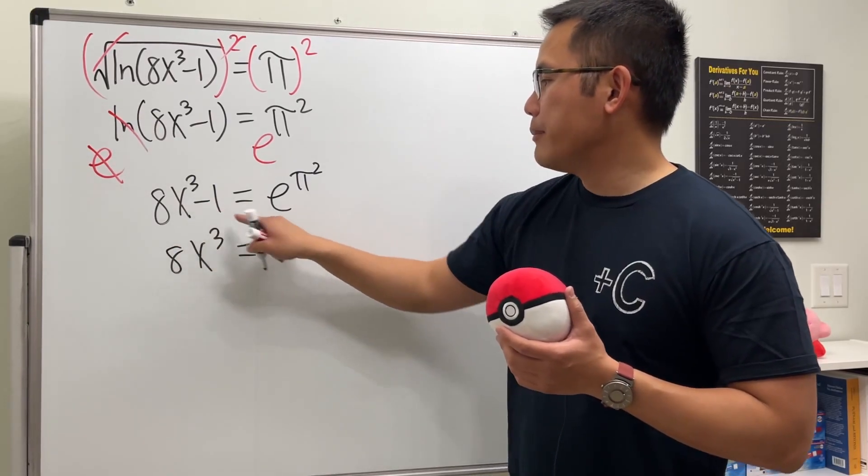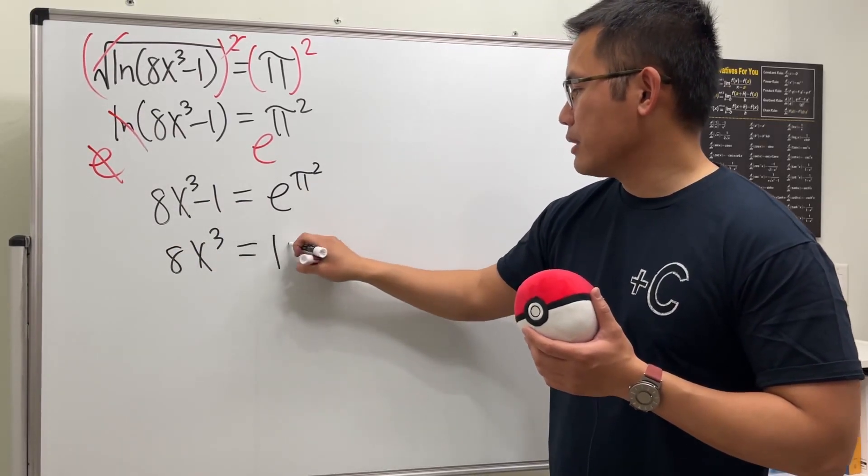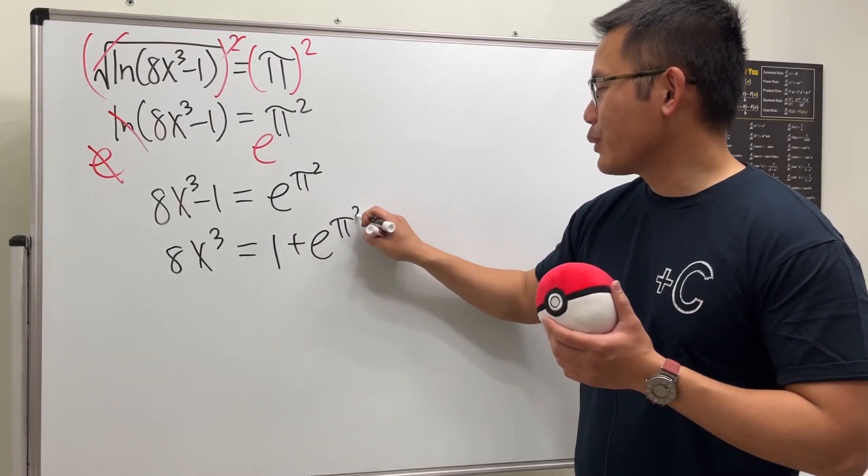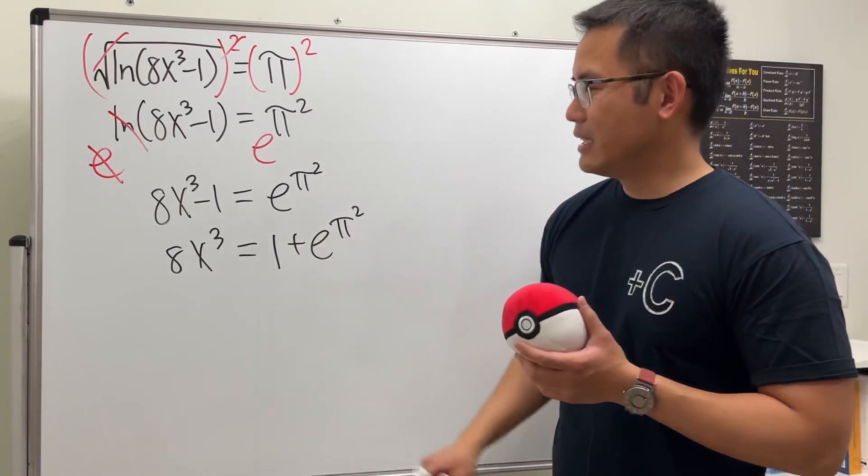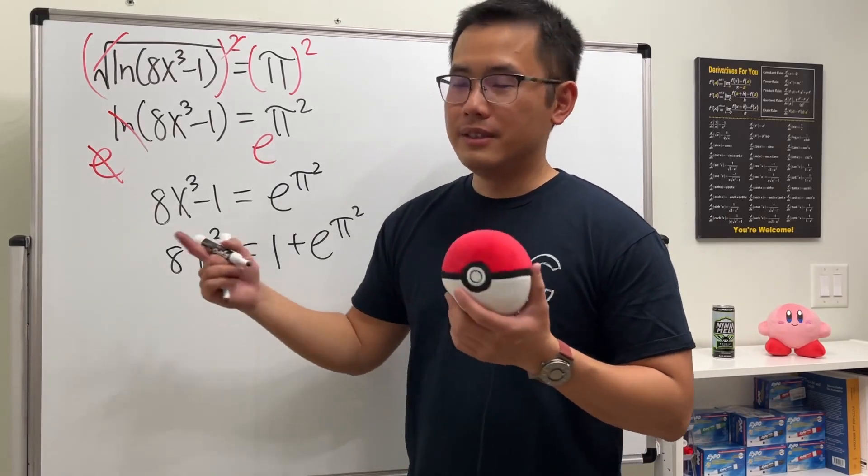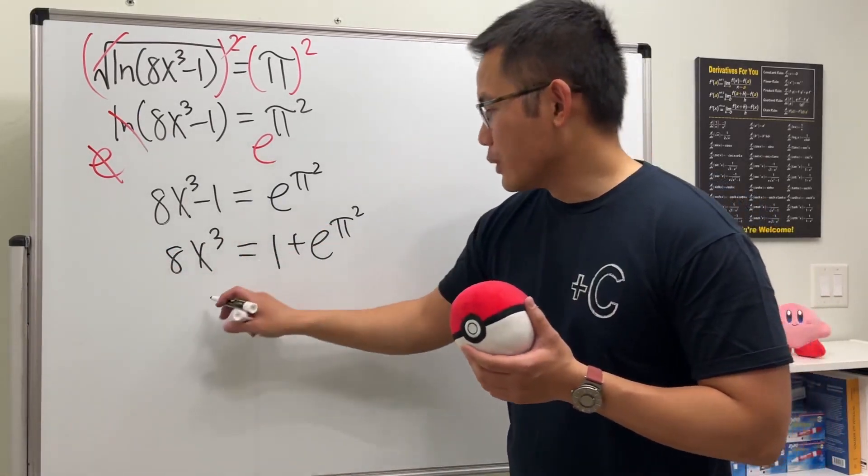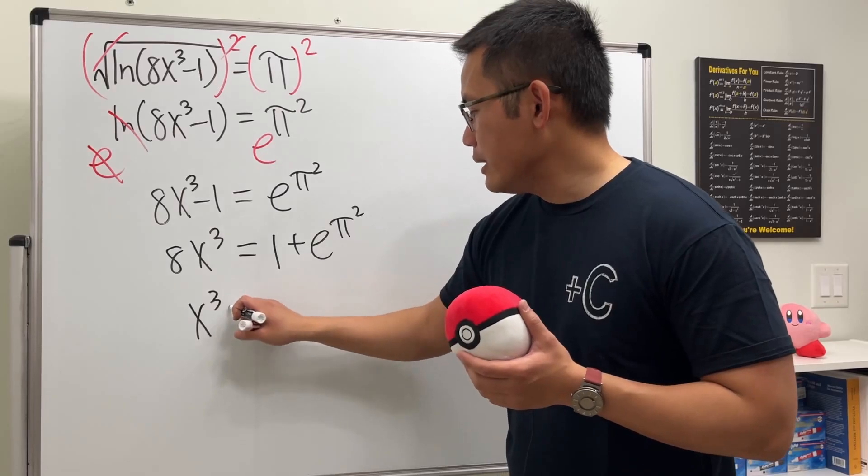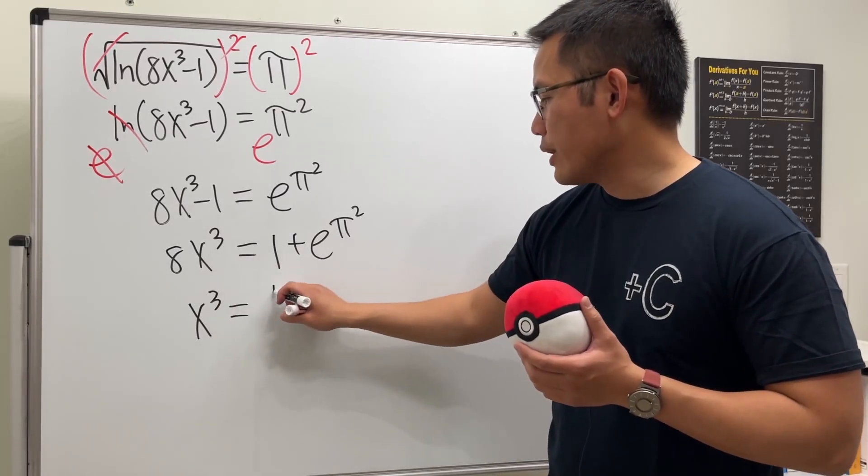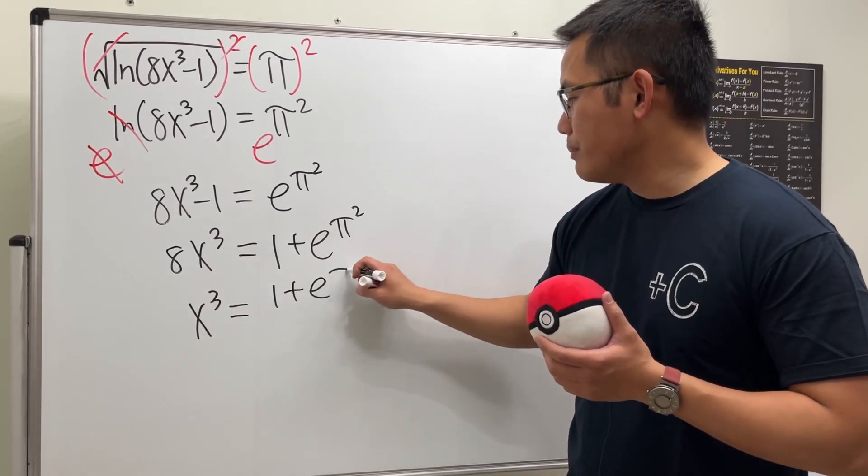What's next? We have to get rid of the 8. This is 8 times that, so we will have to divide it by 8. So we get x to the third power equals... divide this by 8, I will write it as 1 plus e to the π squared over 8.